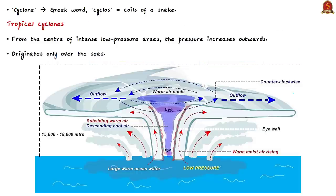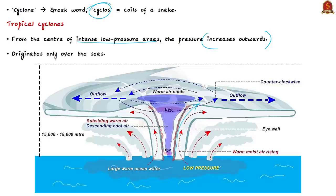The word cyclone is derived from the Greek word 'cyclos', which refers to the coils of a snake. In simple terms, cyclones are intense low pressure areas where wind moves inward like coils of a snake, and the wind circulation around the low pressure condition is called cyclonic circulation. From the center of such intense low pressure areas, the pressure increases outwards, and the intensity of cyclones and the strength of winds is determined by the magnitude of the pressure drop at the center and the rate at which the pressure increases outwards.